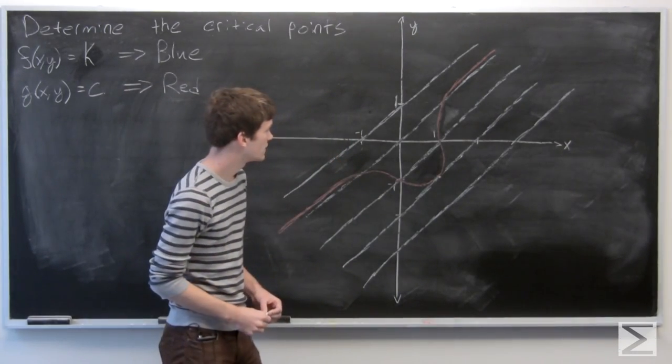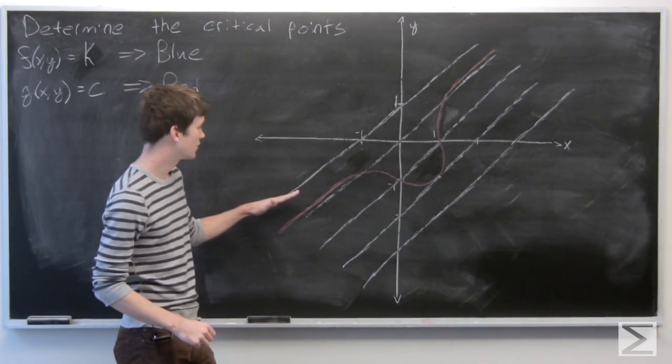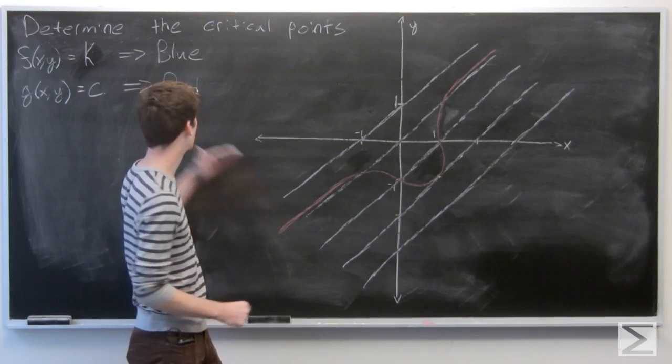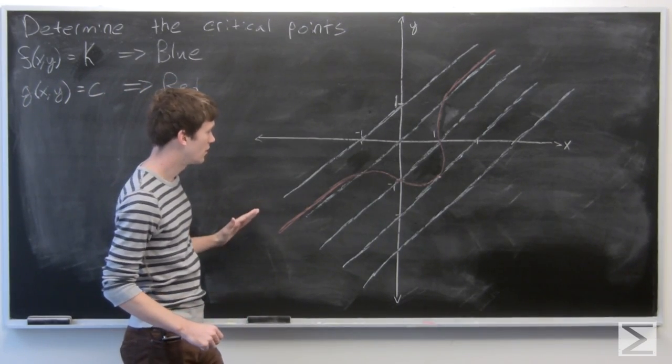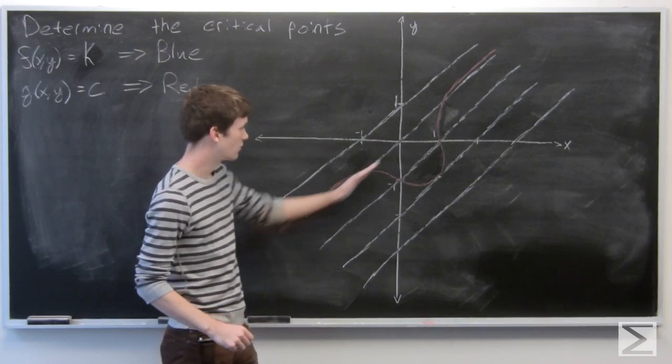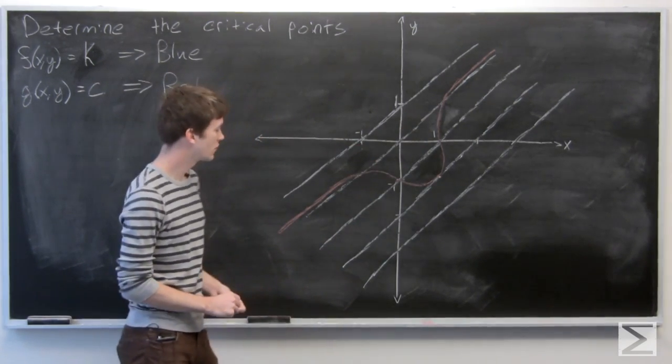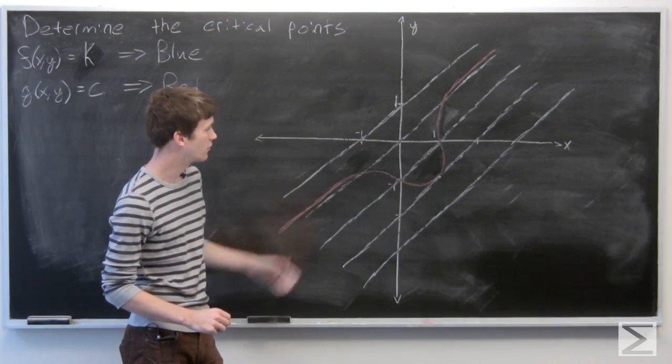We've been given some level curves of f(x,y) equals some constant k, and k is varying, so the level curves of f are given in blue.